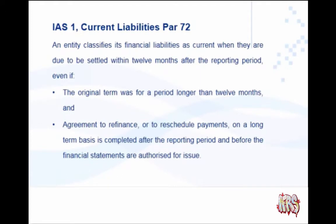Paragraph 72 reads as follows: an entity classifies its financial liabilities as current when they are due to be settled within 12 months after the reporting period. This is the same as paragraph 69. The paragraph goes further and says this applies even if the original term was for a period longer than 12 months.